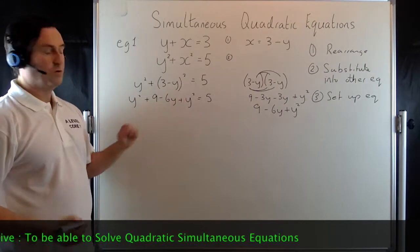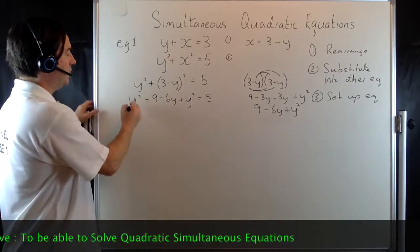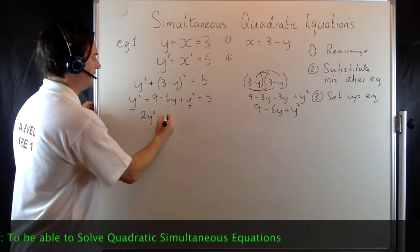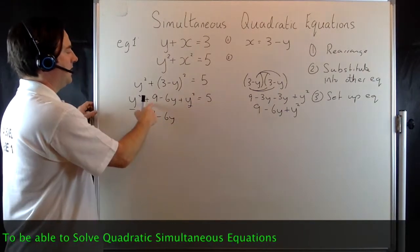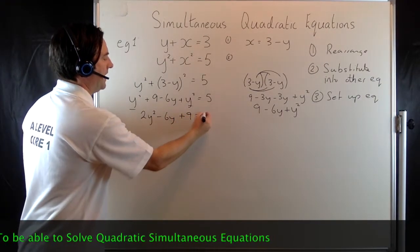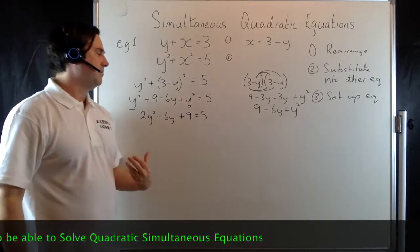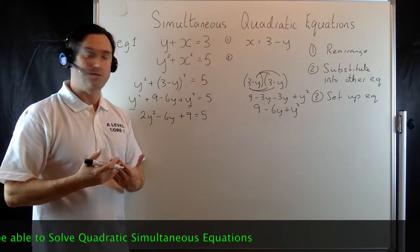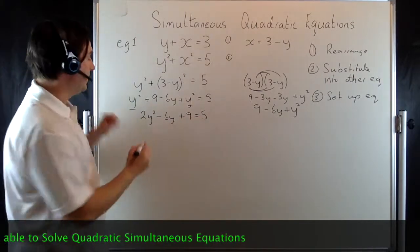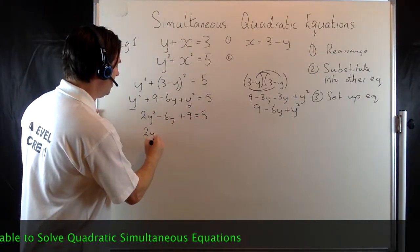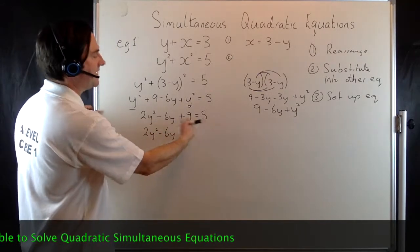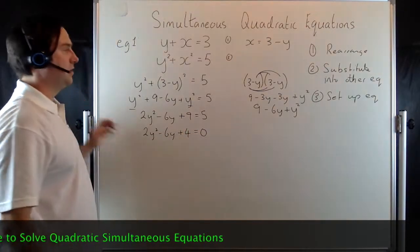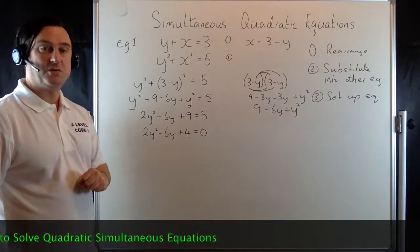The next step for this would be to set up an equation — Step 3 would be to set up the equation. Now because we've got a quadratic here, we're going to add the two y squareds together, giving us 2y squared, minus 6y, plus 9, equals 5. Quadratics need to be equal to 0 in order to solve them. So I'm now going to take this 5 over to the other side to leave me with 2y squared minus 6y plus 4 equals 0.